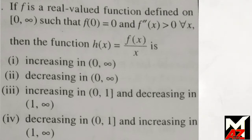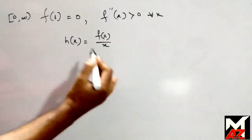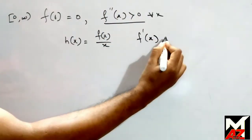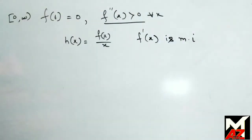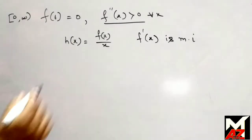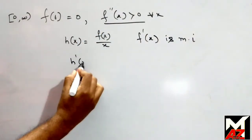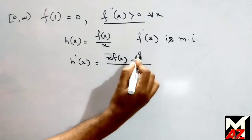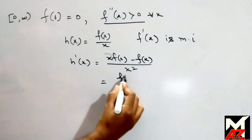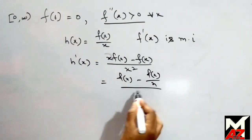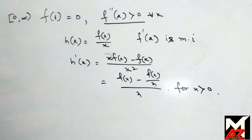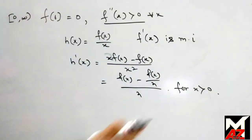Here, given that f''(x) > 0 for all x, that is, f'(x) is strictly monotonically increasing. Now we differentiate h(x) and we get h'(x) = [x·f'(x) − f(x)] / x², for x > 0. We take x as common and cancel from numerator and denominator, so this is valid for x not equal to 0, that is, x > 0.